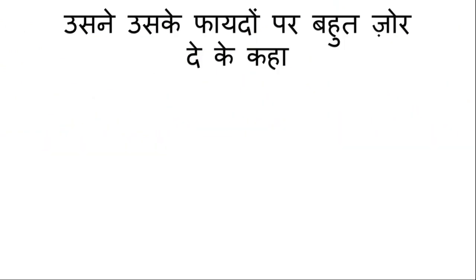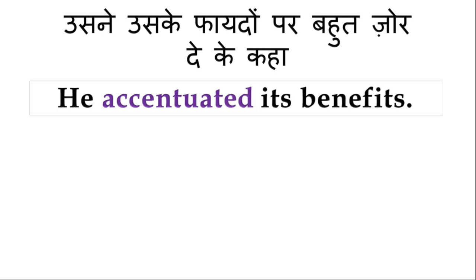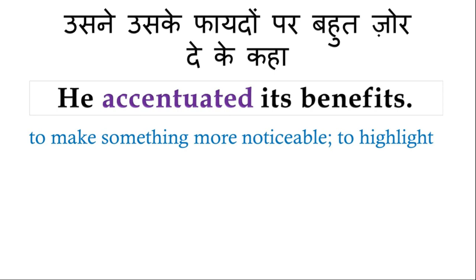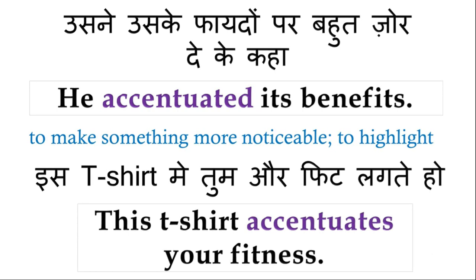اس نے اس کے فائدوں پر بہت زور دے کے کہا — جیسے کوئی product sell کرنے والا فائدے بتا رہا تھا. 'He accentuated its benefits.' Accentuate کا مطلب ہے to make something more noticeable, to highlight — کسی چیز کو emphasize کرنا. جیسے: 'This T-shirt accentuates your fitness' — یہ T-shirt آپ کی fitness کو بہت زیادہ noticeable بناتی ہے.